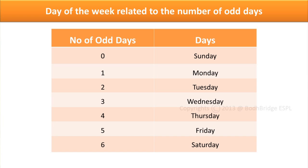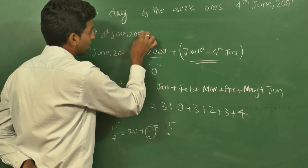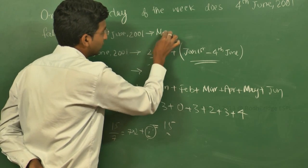Whenever we get one as the odd day, it indicates that the given date will be a Monday. So the answer is Monday.